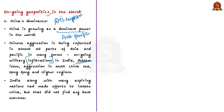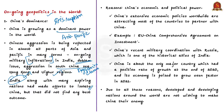This shows how aggressive China is getting each year. We also keep hearing about Chinese heavy-handedness with respect to Hong Kong protesters and what China is doing to the people of the Uyghur region. India along with many aspiring nations made efforts to isolate China, but that did not find any best outcome. This is because the world knows about China's economic and political power. China's extensive economic policies worldwide are attracting most countries to partner with it. Europe has turned its back on earlier stances and revived engagement with China; the EU-China comprehensive investment agreement is an example.